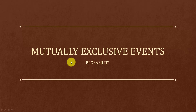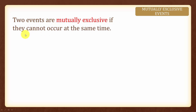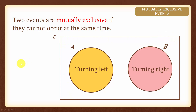In this topic we are going to learn about mutually exclusive events. Two events are mutually exclusive if they cannot occur at the same time. For instance, we cannot turn left and turn right at the same time. Therefore, in this Venn diagram here, set A intersect set B is equal to a null set or empty set.